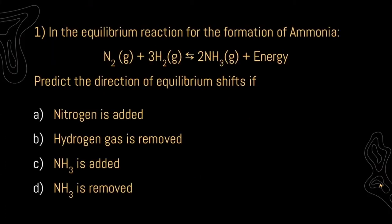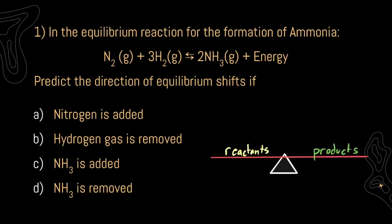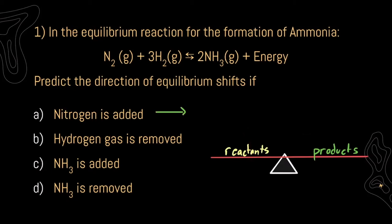For question 1, it says in the equilibrium reaction for the formation of ammonia, we have nitrogen gas and hydrogen gas reacting to create ammonia gas as well as energy. Predict the direction of the equilibrium shifts. For A, we want to know the direction of our equilibrium if we add nitrogen. The best way to look at these problems is through the use of a scale. We are adding nitrogen, so we're adding to our reactants, and my scale is going to shift to the right, so my equilibrium will shift to the right.